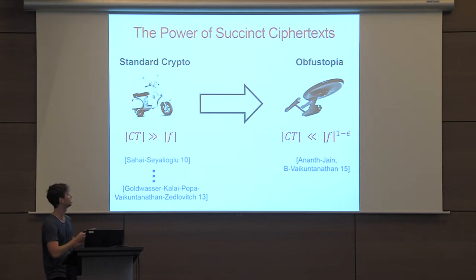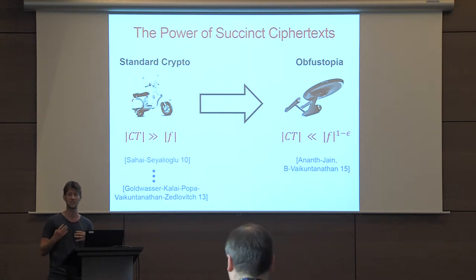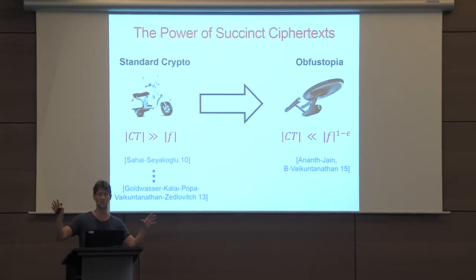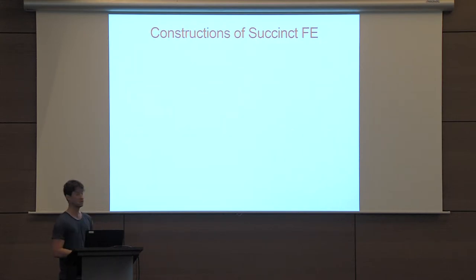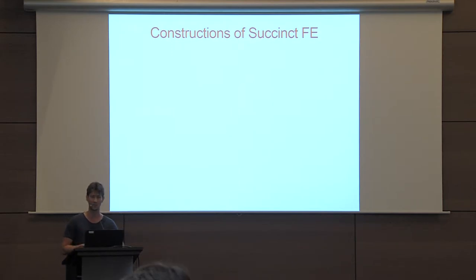There is also another measure of succinctness: how the size of the ciphertext scales with the number of keys. Everything I will say today applies there as well. For this talk, we can think about one key and care about how the ciphertext scales with the size of the corresponding function. Constructing succinct functional encryption has become a central goal in cryptographic research.